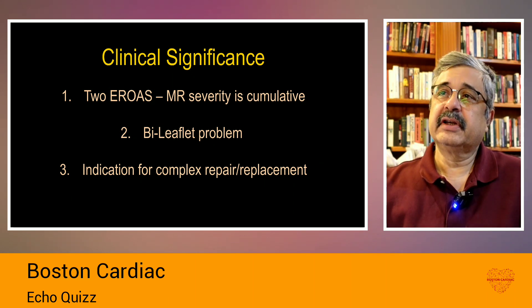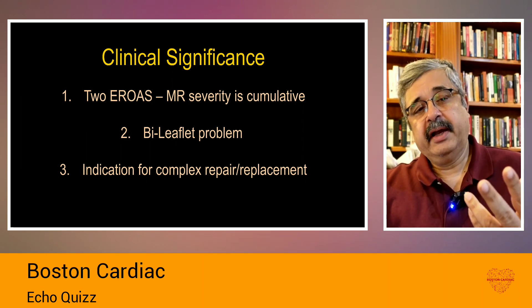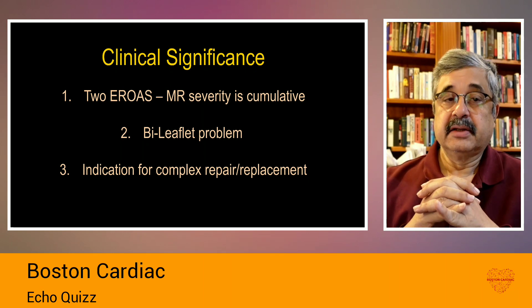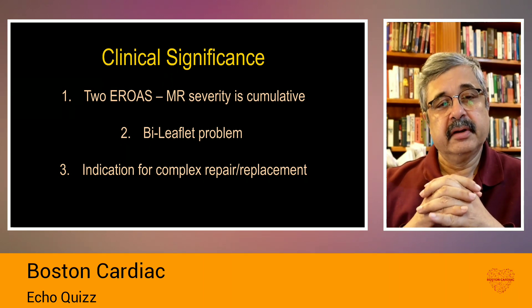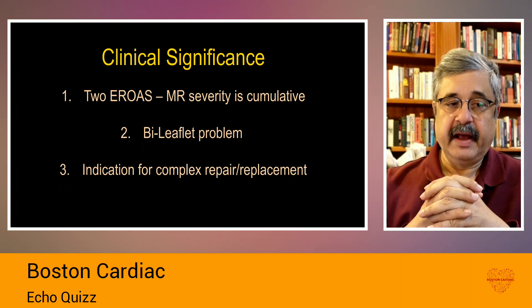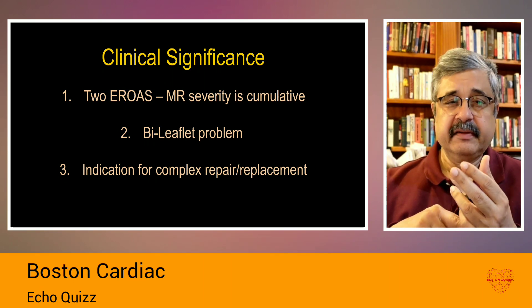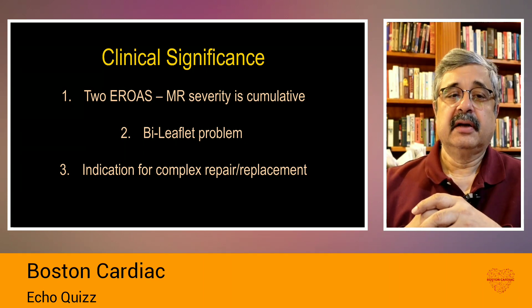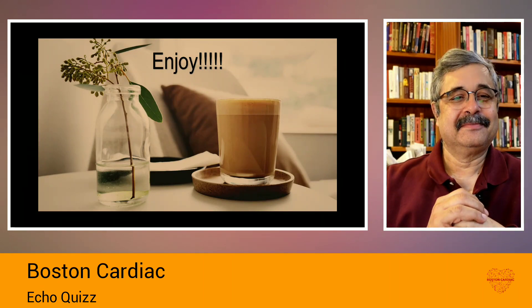The clinical significance is that this implies two effective regurgitant orifice areas, so MR severity is cumulative — two mild severity jets can accumulatively result in moderate or severe mitral regurgitation. Secondly, it is a bileaflet problem, which is sometimes an indication for complex repair or mitral valve replacement, as these valves are sometimes almost impossible to repair. In summary: two EROAs with cumulative MR severity implying bileaflet disease, requiring either complex repair or replacement. This is the crossed sword sign. Thank you very much.